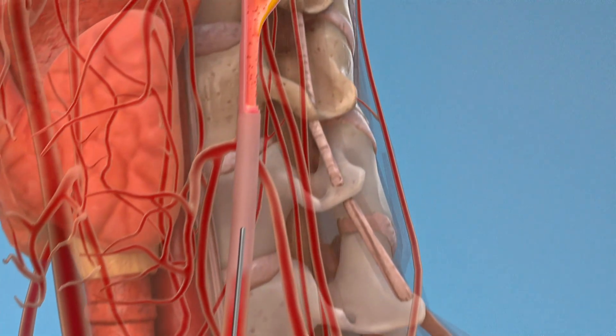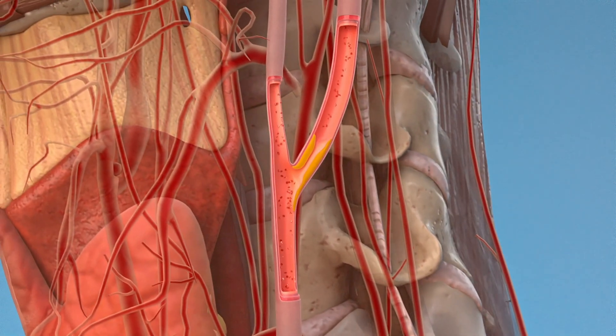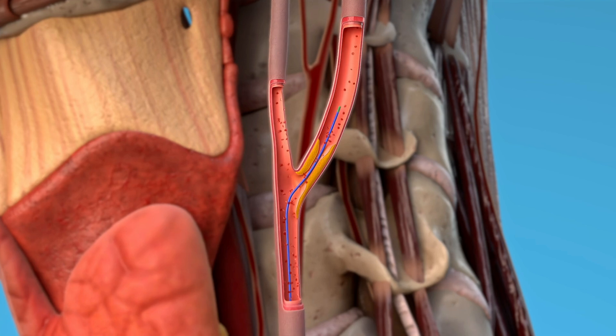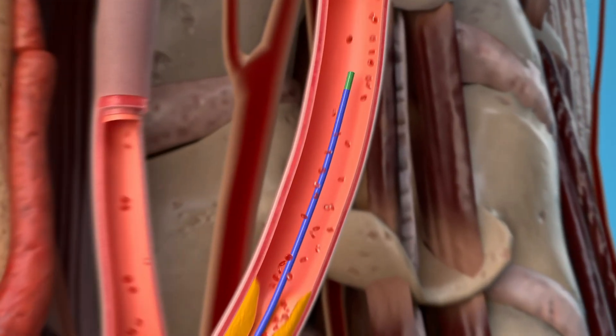After reaching the bifurcation of the left common carotid artery and passing the stenosis zone of the internal carotid artery, a filter trap is installed to prevent embolism.